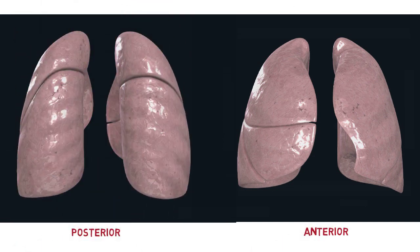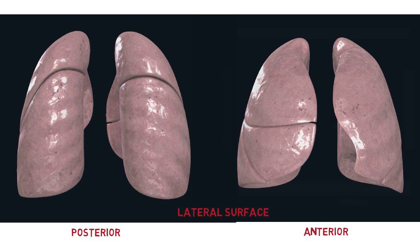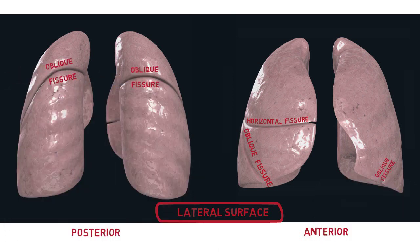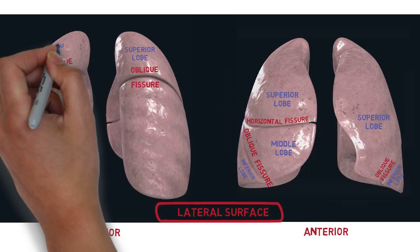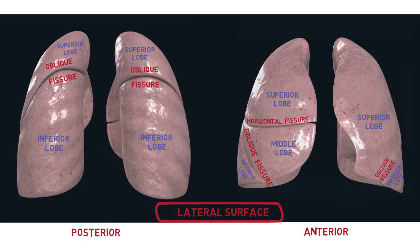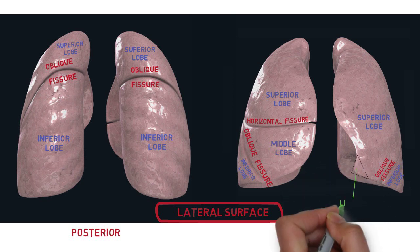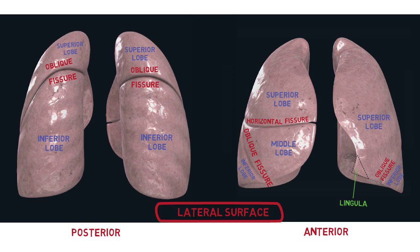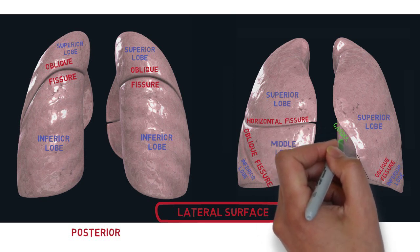Grossly our lungs look like paired cone-shaped organs, each separated in the middle by the mediastinum and both sitting on our diaphragm. It has three surfaces: the lateral, medial and diaphragmatic. Looking at the lateral surface, the right lung has two fissures which are oblique and horizontal, whereas the left lung has only one. So these divide the right and left lung into three and two lobes respectively. Unlike the left lung, the right lung has a middle lobe. Other differences include that the left lung also has a thin projection from its inferior lobe called the lingula, and a curve at its medial border due to the cardiac depression, called the cardiac notch. Our right lung is also shorter and heavier compared to the left lung.